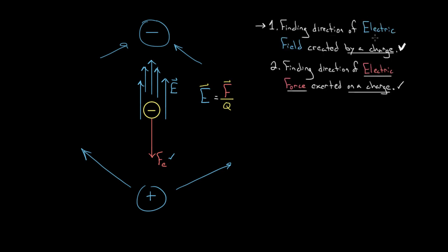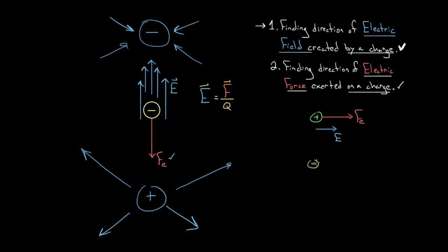To recap: you can find the direction of the electric field created by a charge, since positive charges create fields that point radially away from them, and negative charges create fields that point radially toward them. And you can find the direction of the electric force on a charge, since positive charges feel a force in the same direction as the electric field, and negative charges feel a force in the opposite direction to the electric field.